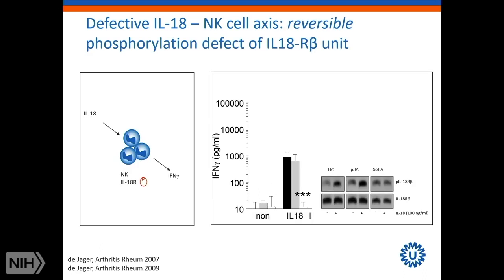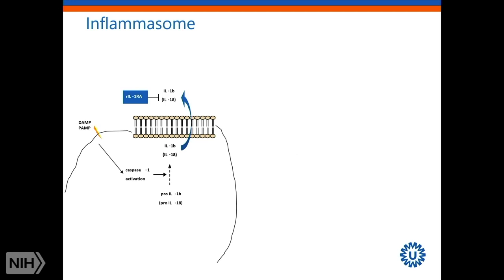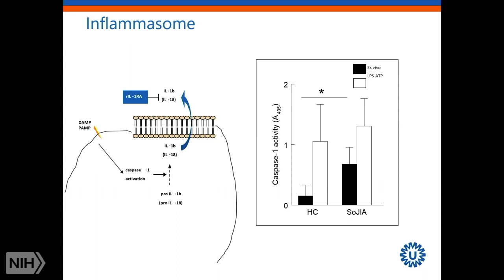We discovered a couple of years ago that this defect of the IL-18/NK cell axis is actually reversible, lying in the IL-18 receptor beta unit, which shows a phosphorylation defect that is reversible after treatment with IL-1 blockade. In that same cohort, we did measurements on the inflammasome activity of our patients. We found evidence that, constitutively, there is increased activity of caspase-1 compared to healthy controls. If you stimulate with LPS and ATP, you can increase caspase-1 activity in healthy controls and also in systemic JIA patients, but then the difference is not significant anymore.